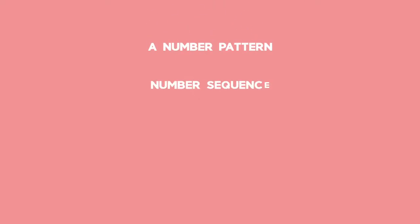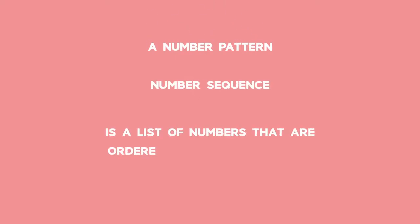A number pattern, also known as a number sequence, is a list of numbers that are ordered according to a rule. Each number in the sequence is called a term.